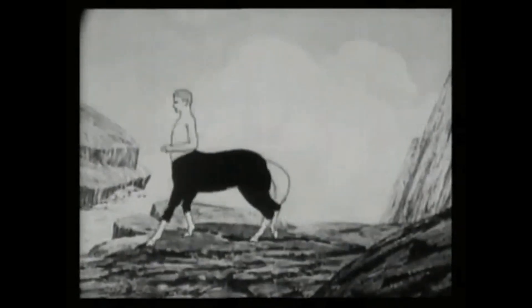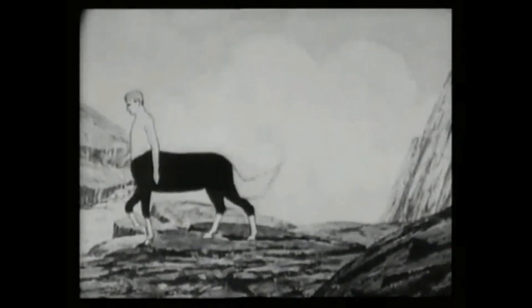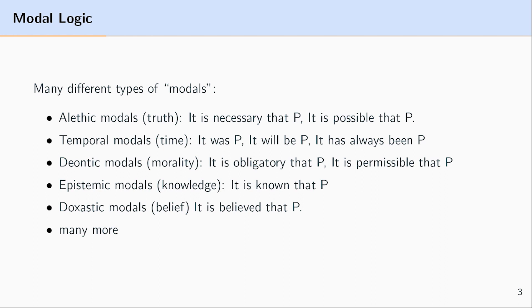There are many different types of ways you can qualify the truth of a statement or qualify a proposition. The most common ones are known as alethic modals, and these qualify the truth of a particular proposition by saying it's necessary that the proposition is the case, or it's possible that the proposition is the case.